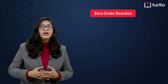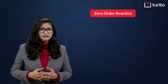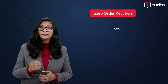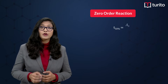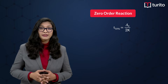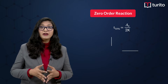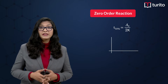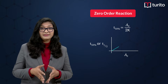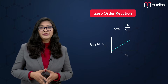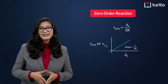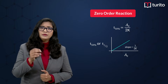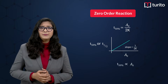As you already know, t₅₀% of a zero order reaction is equal to A₀ divided by 2k. That means if I draw a graph between t½ and A₀, it will be a straight line passing through the origin with a slope of 1 by 2k.